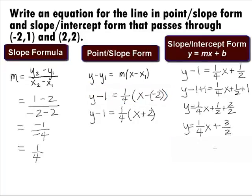Our final answer for the line that passes through the points negative 2, 1 and 2, 2 in point slope form is y minus 1 equal to 1 fourth times the quantity x plus 2, and in slope intercept form, it is y equal to 1 fourth x plus 3 halves.